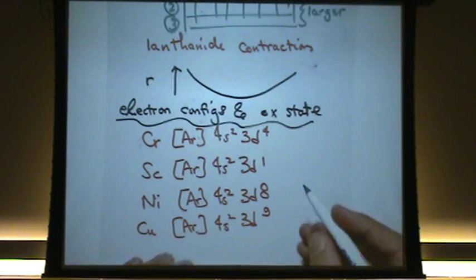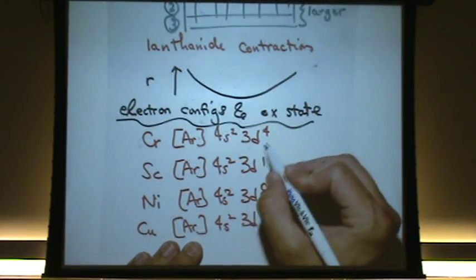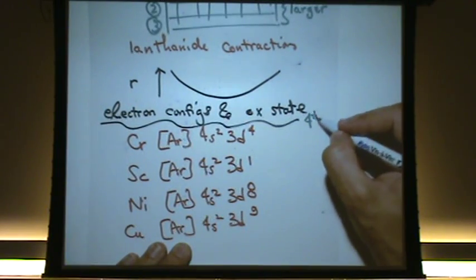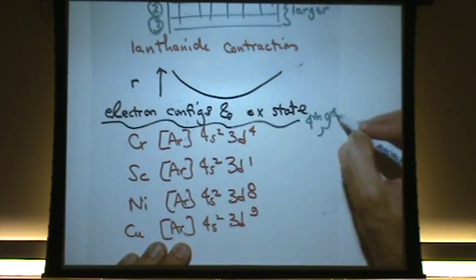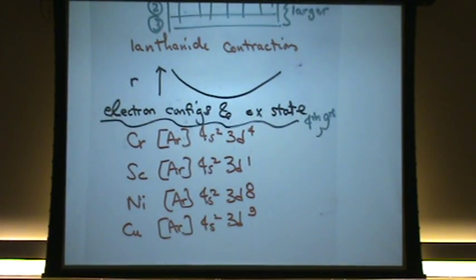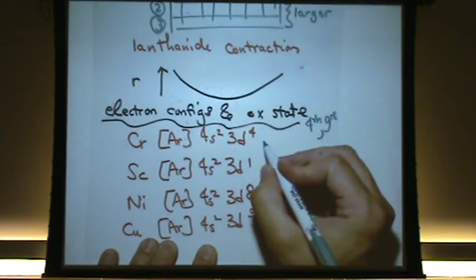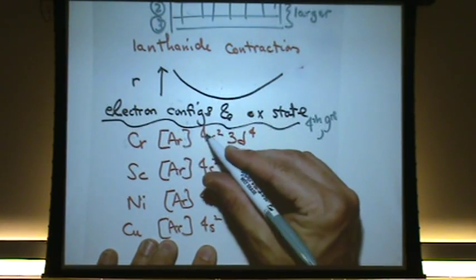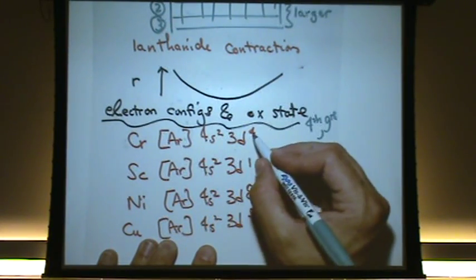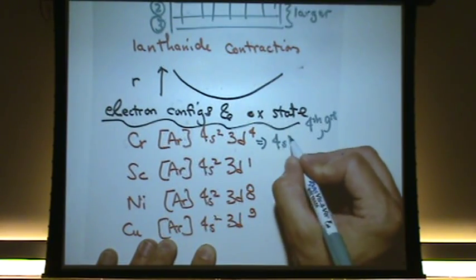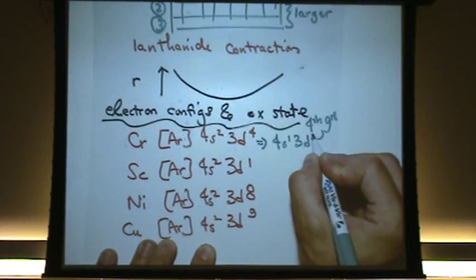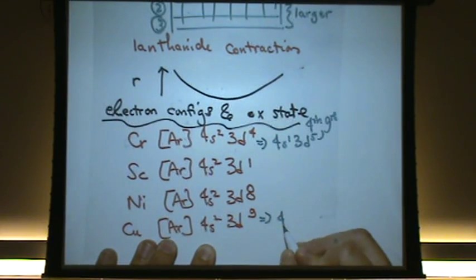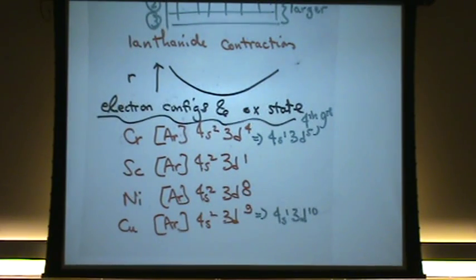Second thing, if you are in the fourth column or ninth column in the periodic table, you'll find something interesting. That instead of doing 4s2 or whatever the N value is, s2 d4, this is going to change to 4s1 3d5. And for the ninth column, some other thing will happen: 4s1 3d10. That exception is again going to happen in the fourth and the ninth column, so the chromium column and the copper column.